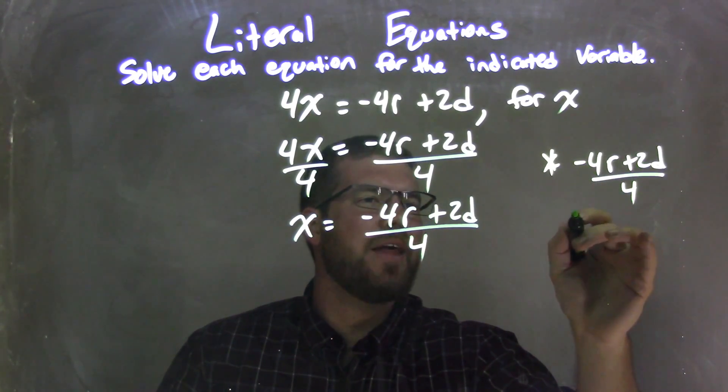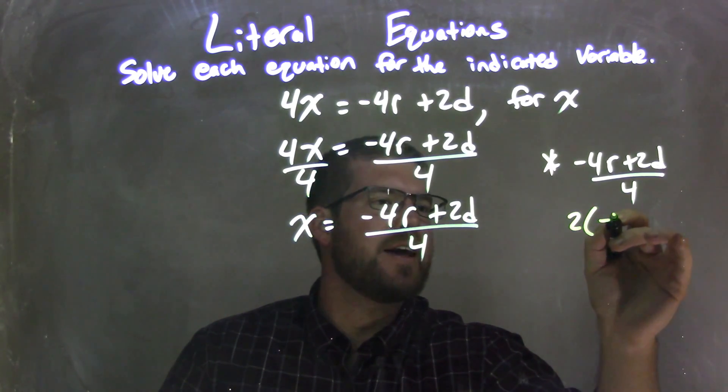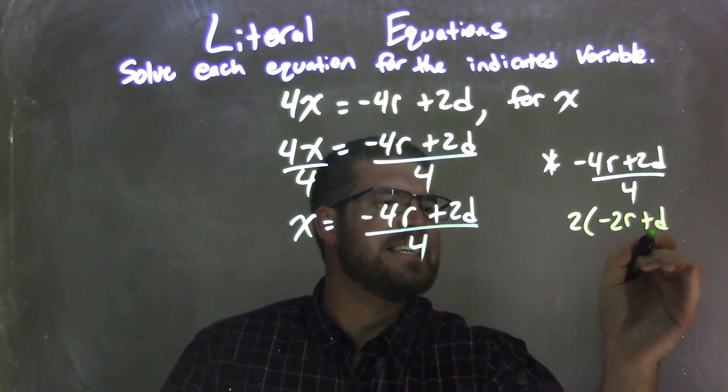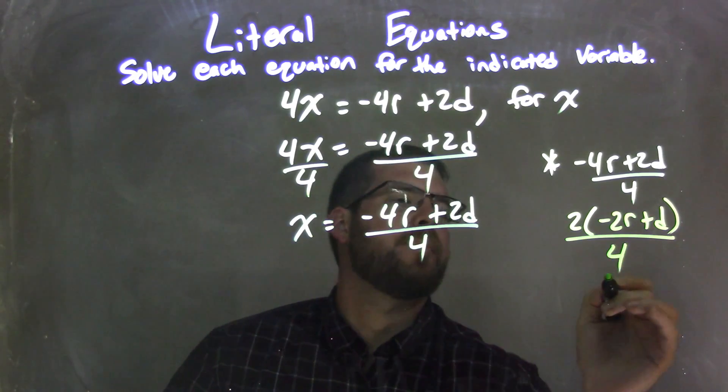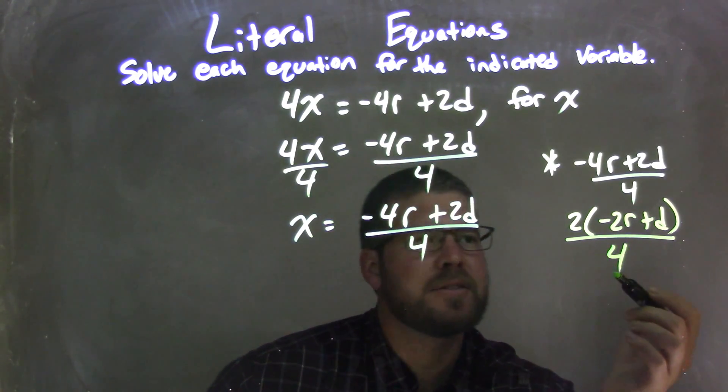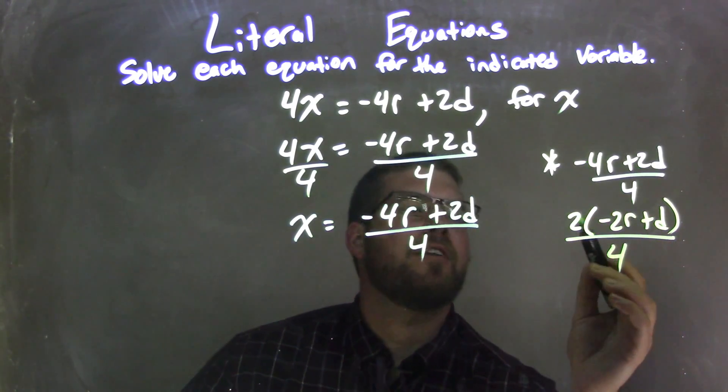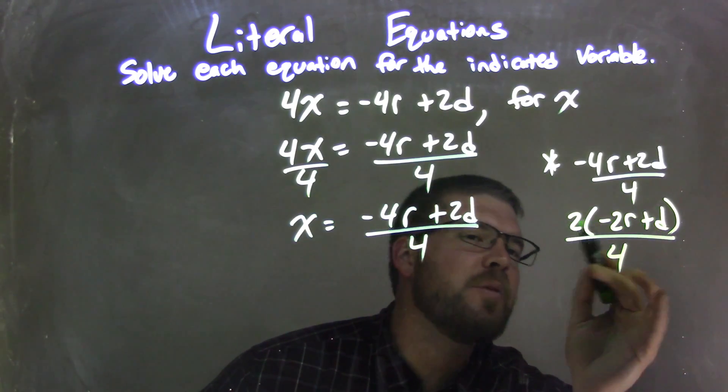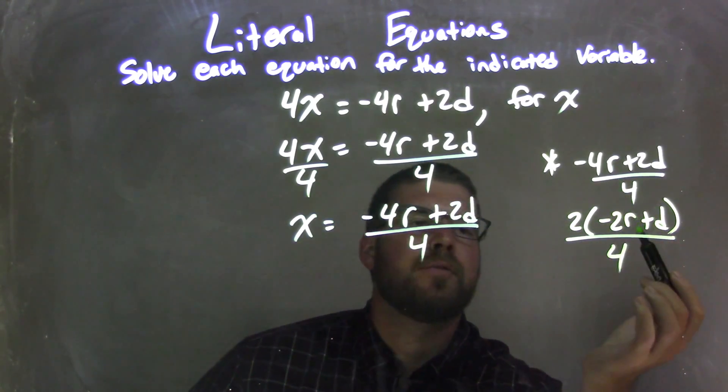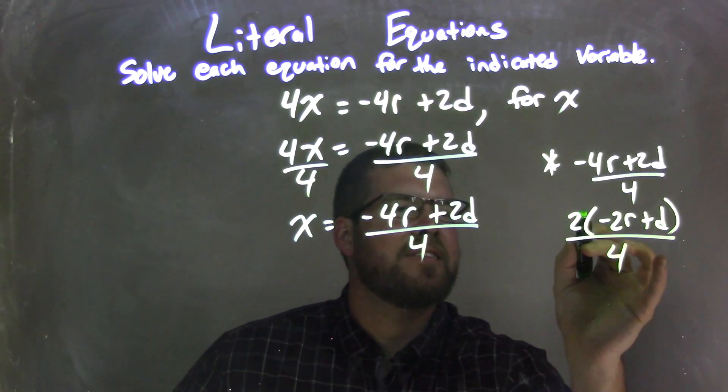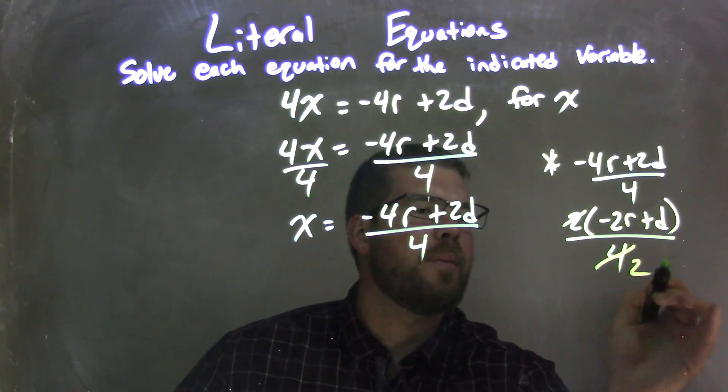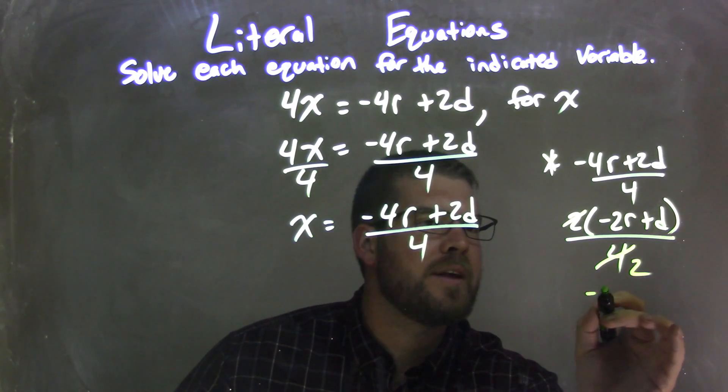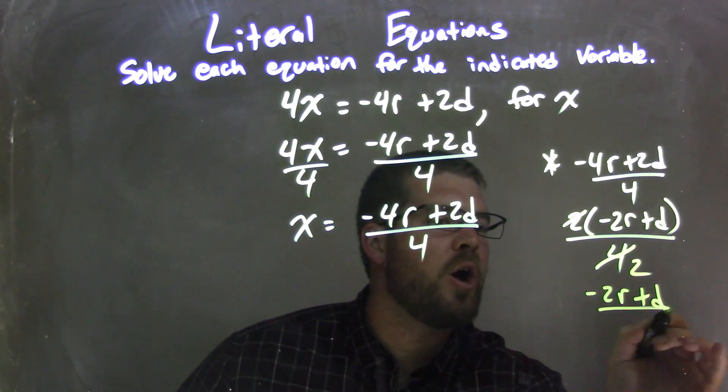and I'm going to pull out a 2. And what that does, it leaves me with 2 times negative 2r plus d all over 4. So hopefully you can see that little step there that I pulled out a 2, giving me 2 times parentheses negative 2r plus d. And if I distributed that 2 back in, I'd get what's written above. But what that does is I see that 2 and the 4 can cross out, and that 4 becomes a 2.